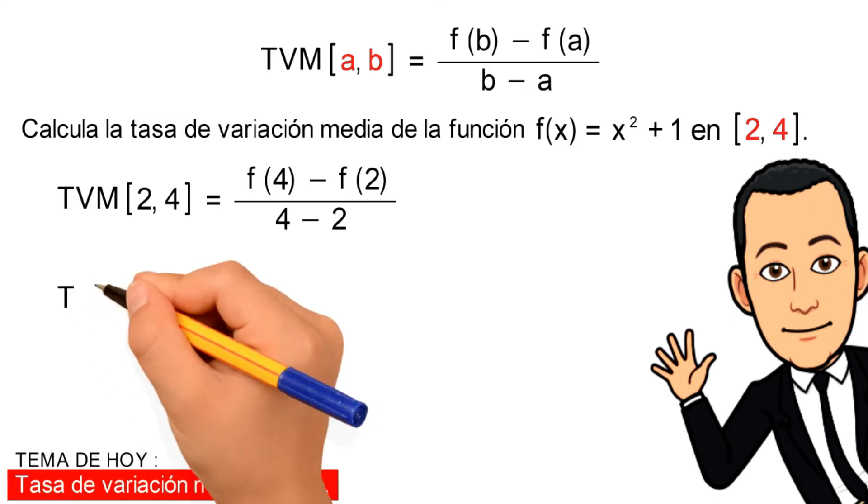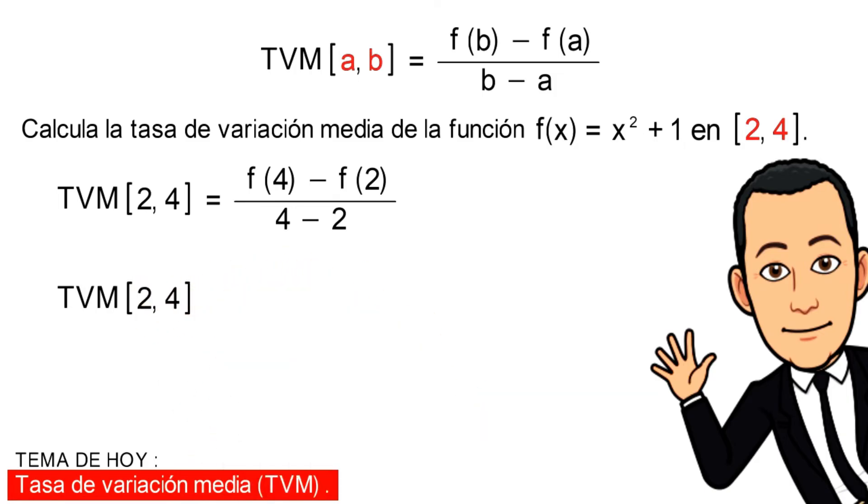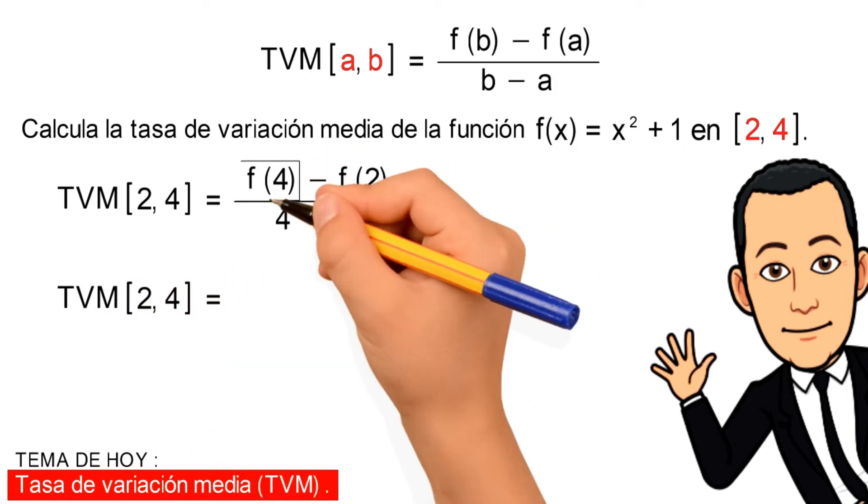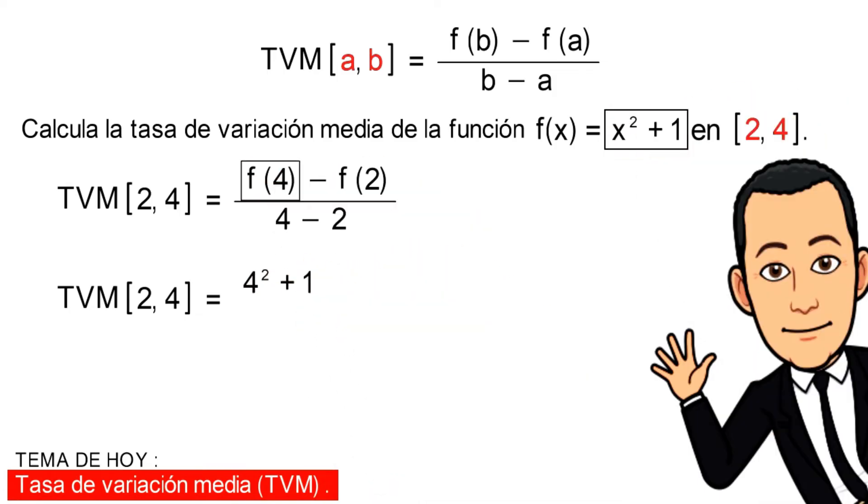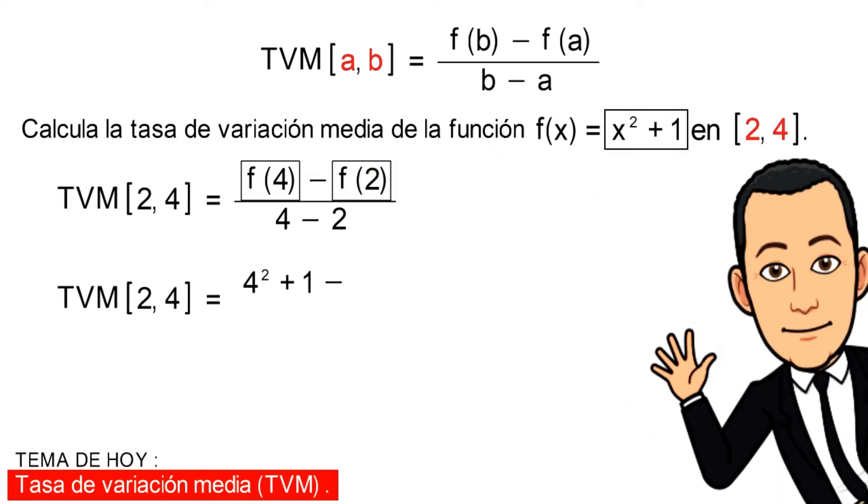Luego, la tasa de variación media para el intervalo cerrado [2, 4] es igual, reemplazando f(4), que sería la función evaluada en el valor 4, menos f(2), que sería la función evaluada en 2.